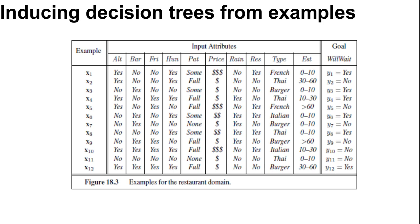Here you can see example x1 to x12. The positive examples are ones in which the goal will wait is true: x1, x3 and so on. The negative examples are ones in which it is false: x2, x5 and so on.